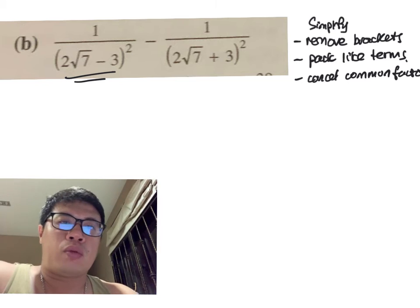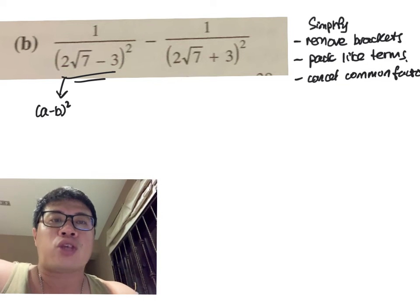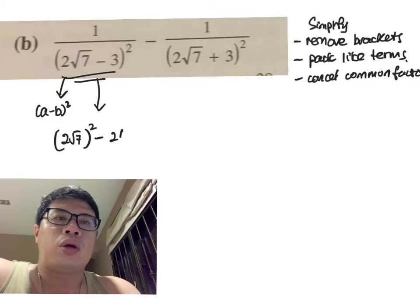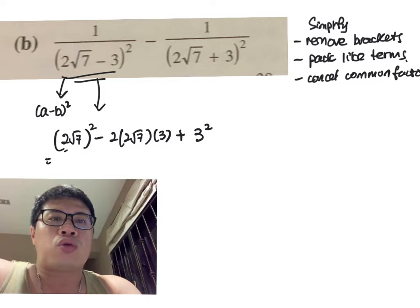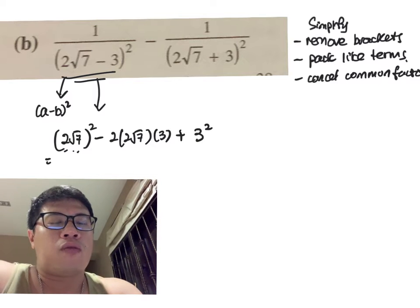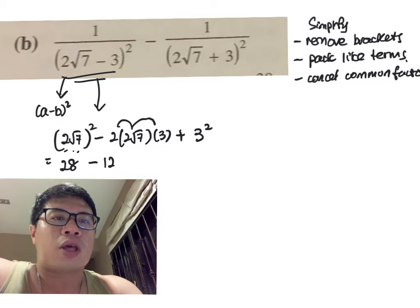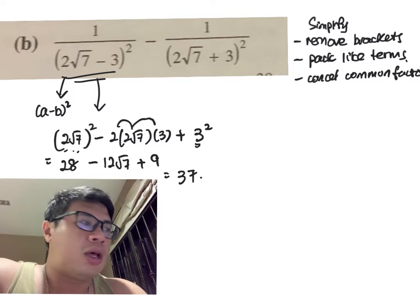If we take (2√7 - 3), just observe the fact—if we use the identity (a - b)² which gives you a² - 2ab + b², so 2 squared times 7 gives you 28, minus 12√7, and 3 squared gives you 9. Combining the denominator, you get 37 - 12√7.